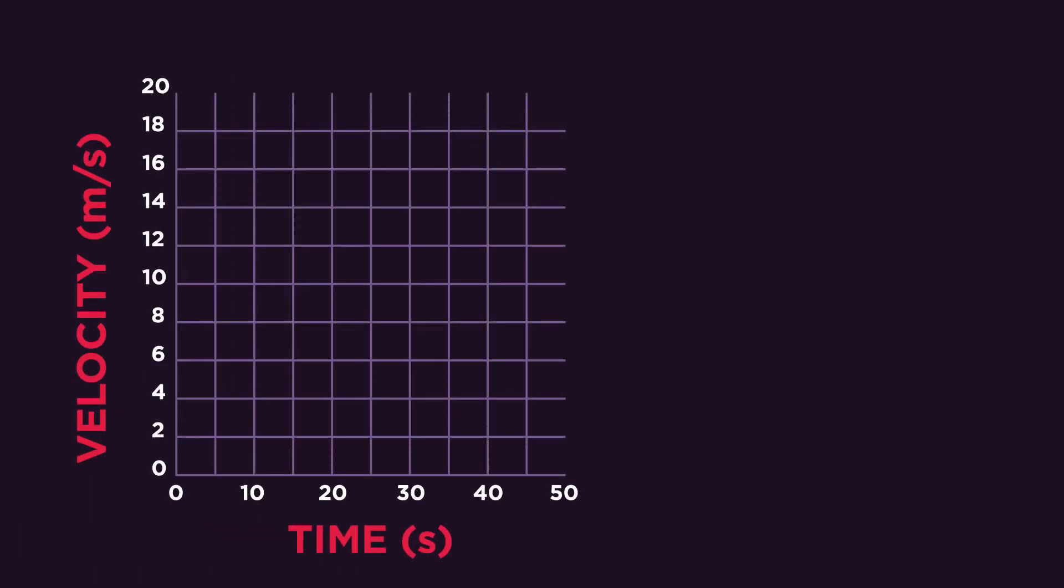Take a look at this simple velocity-time graph. The points A to B show an increase in velocity of 18 meters per second. The gradient or steepness of this line is the same as this change in velocity.